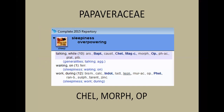The first rubric that came up was 'sleep overpowering while talking' — meaning the patient falls asleep while talking. This rubric contains only 10 remedies total, and three of them belong to Papaveraceae: Chelidonium, Morphinum, and Opium. This strongly indicates that overpowering sleep is a characteristic theme of the Papaveraceae family.